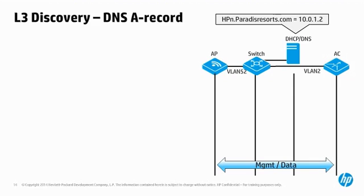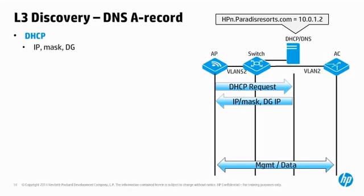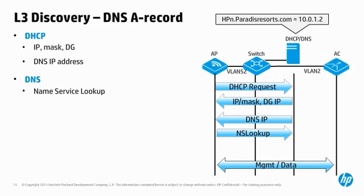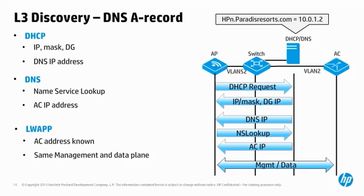When the AP boots, it uses DHCP to get an IP address, mask, and gateway as always. Additionally, the DHCP server supplies the IP address of our DNS server — 10.1.1.100 in this example — and the domain name in use. The AP makes a few attempts at L2 broadcast discovery. After those all fail, the AP sends a DNS name lookup request to the DNS server. The server responds with the IP address of the AC, 10.0.1.2. Now that the AP knows the unicast IP address of the AC, the process is as previously described: the AP sends a unicast discovery request and gets a reply, firmware is updated, the AP is configured, and begins to operate normally.